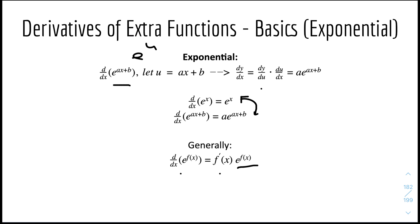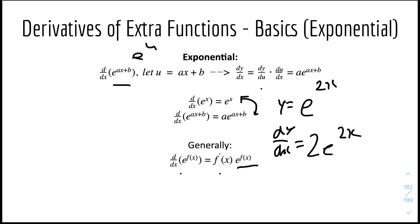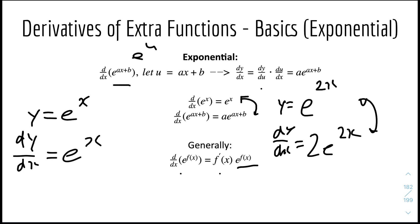So if we have y equals e to the power of 2x, dy/dx will be equal to the derivative of 2x, which is 2. So it will just be 2e^(2x). It's quite simple. One thing to note is that if y equals e to the power of x, the derivative will be equal to itself, because the derivative of x is 1, so it's just 1 times e to the power of x, or just e^x by itself.